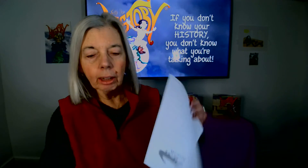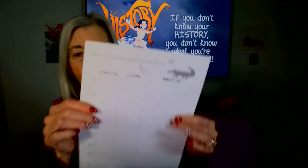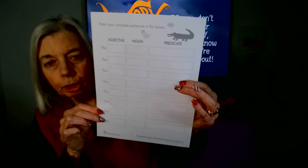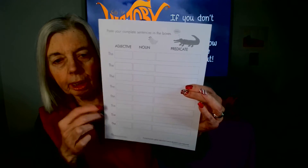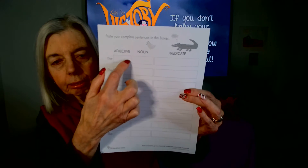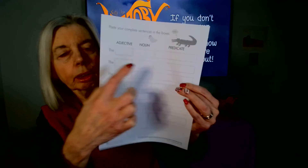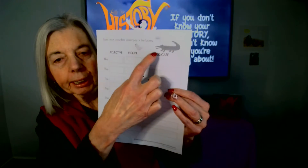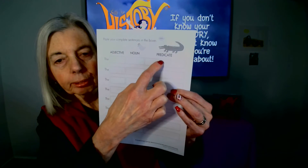After the child has done that, take the scissors and cut out the nouns and predicates. On the second page, you will do the pasting — the child will put the noun and then the predicate that matches it.